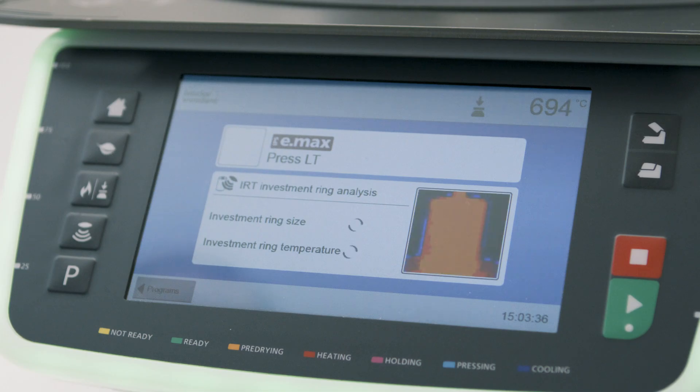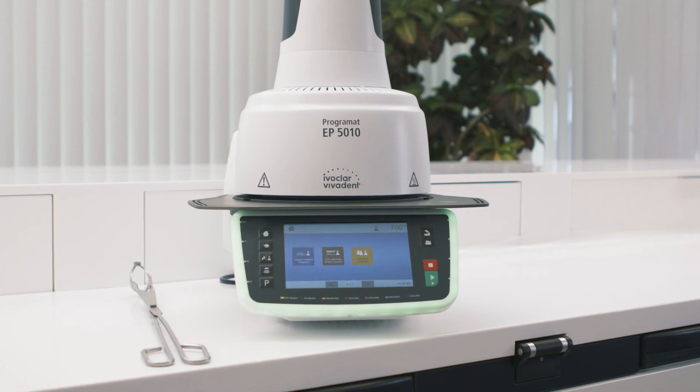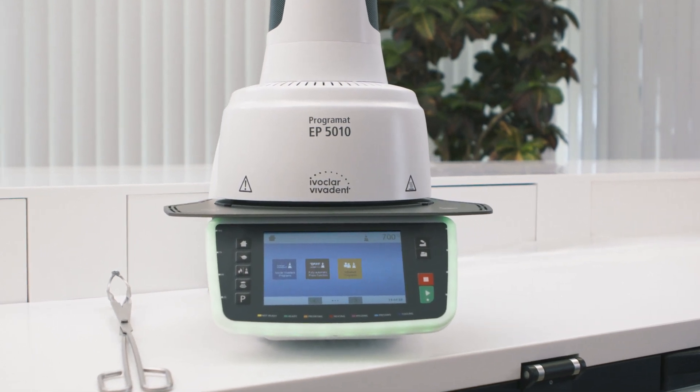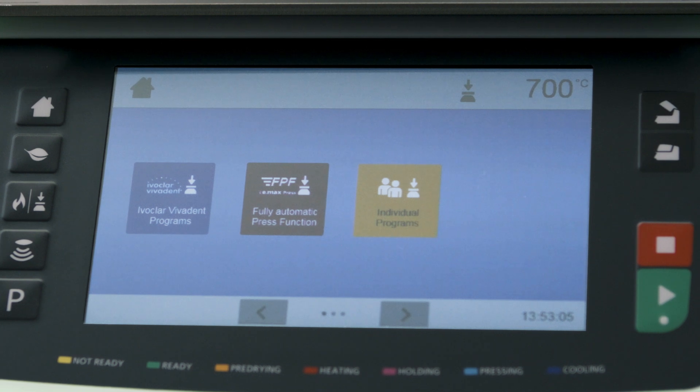The infrared technology of the Programat Furnaces was specifically developed further for use in the Press Furnaces. The following shows other functions which are also possible with the EP5010 G2: FPF Function, Conventional Press Function, and Individual Programming Options.